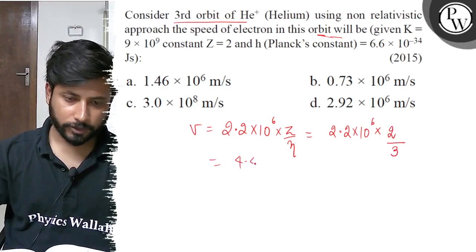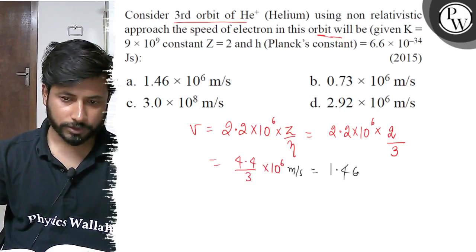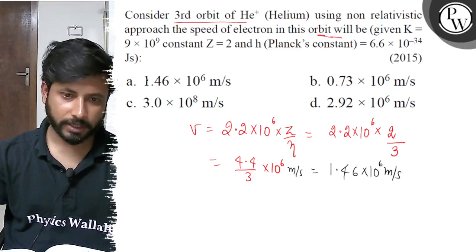So we have 4.4 × 10^6 divided by 3, which equals 1.46 × 10^6 meter per second. So the final answer is option (a).